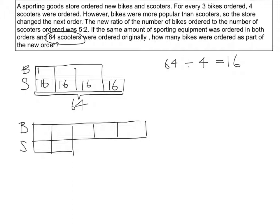Now if 1 box is 16, that means 1 box of bikes is also 16. So this is 16, 16, 16.